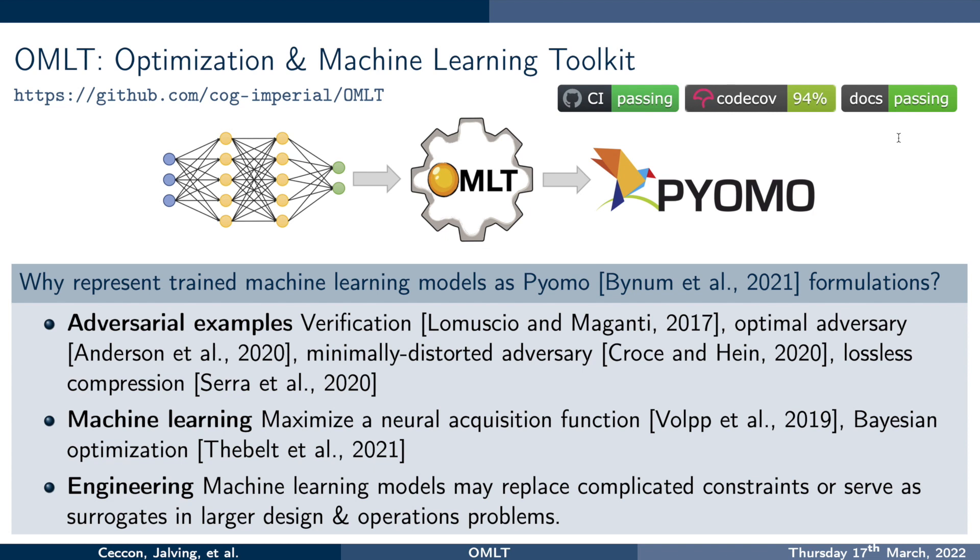So why might I like to represent trained machine learning models as PyOMO formulations? First off, I might want to do optimization formulations that are thinking about adversarial examples and I'll give a few examples of this on the next slide. I might also want to be investigating maximizing a neural acquisition function in a machine learning context or doing Bayesian optimization also in a machine learning context. In engineering, machine learning models may replace complicated constraints or serve as surrogates in larger design and operations problems.